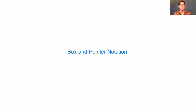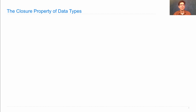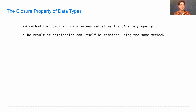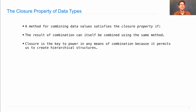Box and pointer notation is a new addition to environment diagrams. Let me tell you about a property of data types. A method for combining data values satisfies the closure property if the result of combination can itself be combined using the same method. Closure is the key to power in any means of combination because it permits us to create hierarchical structures.